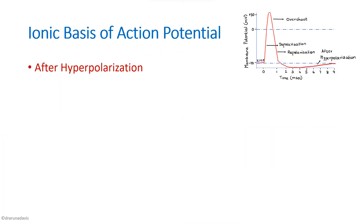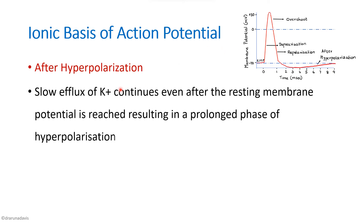After-hyperpolarization occurs because the slow efflux of potassium continues even after the resting membrane potential is reached. Since potassium channels activate slowly, they remain open past the resting membrane potential, causing the prolonged hyperpolarization phase.